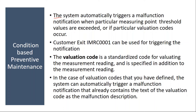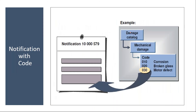The system automatically triggers a malfunction notification when a particular measuring point's threshold values are exceeded, or if a particular valuation code occurs. When they assign a valuation code in the measurement document, the system automatically triggers a notification for the preventive maintenance activity. From this notification, they will convert it to an order and then perform the preventive maintenance. I will show you this in the system.